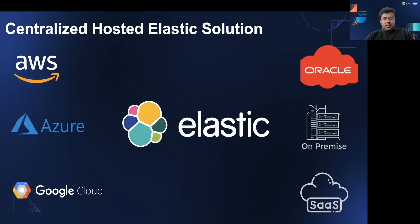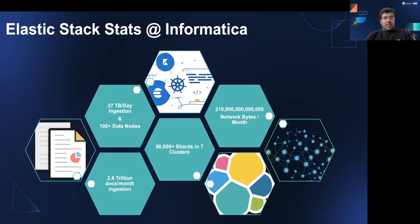Elasticsearch is a centralized solution to get data across multiple cloud providers, on-premises systems, or SaaS vendors. We collect all of our data and store it in a centralized Elastic cluster launched in AWS. The scale is significant — we ingest about 37 terabytes of data per day, there are about 100 nodes, 2.8 trillion documents ingested every month, and we store it on 60,000-plus shards. Network traffic is massive — close to 50% of the network traffic originates within this ecosystem at Informatica.